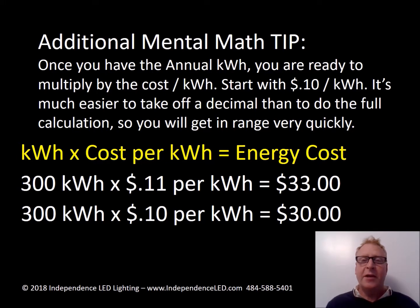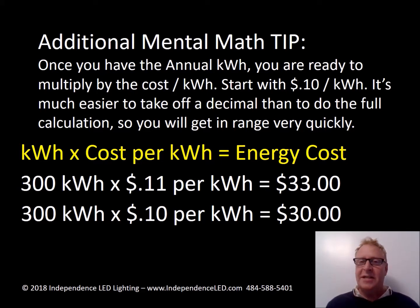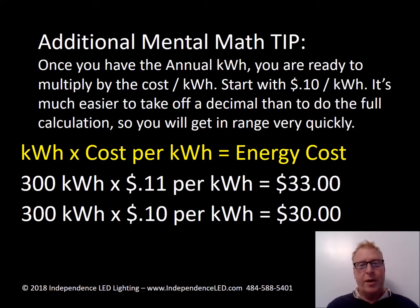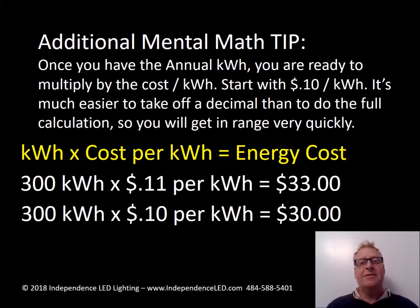Here's an additional mental math tip: once you have the annual kilowatt hours, you're now ready to multiply by the cost per unit. If you start with 10 cents per kilowatt hour, it's much easier to move the decimal than to do the full calculation, so you will get in range very quickly. In this case, with 300 kilowatt hours at 11 cents it's $33, or at 10 cents it's $30. That gives you the range, and once you have the exact kilowatt cost for the facility or your client, you can run the numbers — but at least you've got the right order of magnitude.